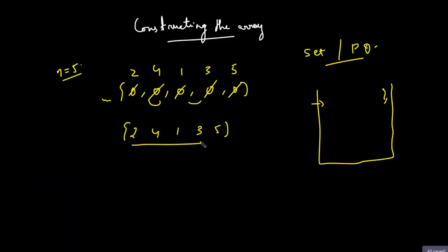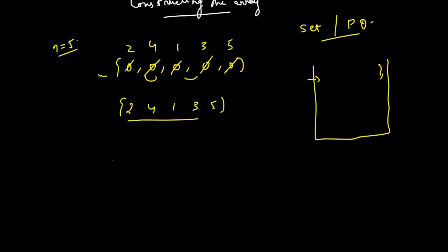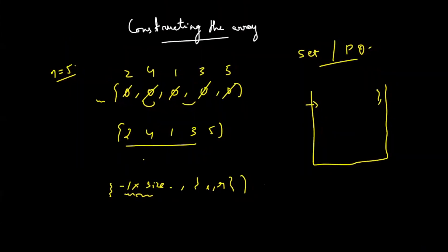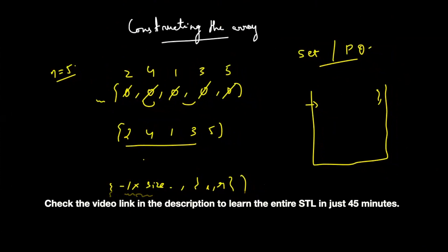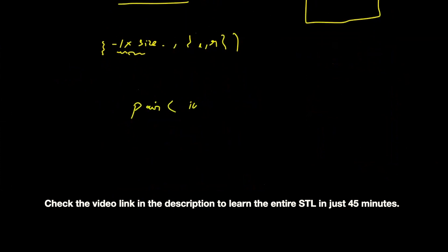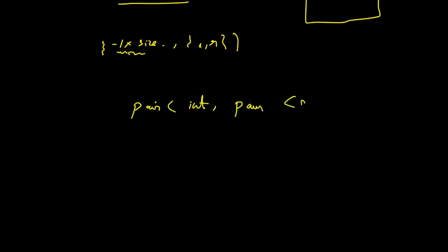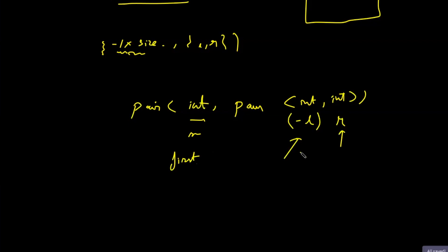This is how a priority queue helps. You can also use a set. Since a set stores the minimal element, instead of inserting the size you insert minus 1 times the size, so the largest subarray naturally comes first. Keep L and R as the other fields — set also works fine. If you don't know priority queue, I highly recommend going back to my STL video and learning it first. The elements can be stored as a pair of (int, pair of (int, int)), where you store the size, then L (as minus L), then R. These can be referred to as first, second.first, and second.second respectively.